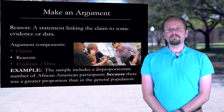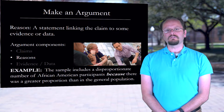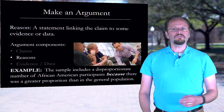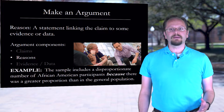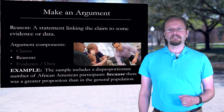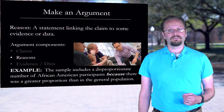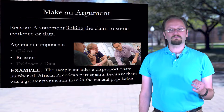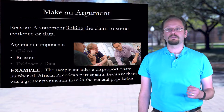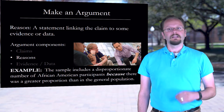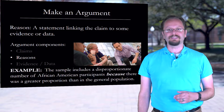In between the claim and the data, however, I need to offer a reason that links them. We can usually think of reasons as the kind of statements or examples that would follow a 'because' in a sentence, like my sample sentence here: 'The sample includes a disproportionate number of African American participants because there was a greater proportion than in the general population in the city.'